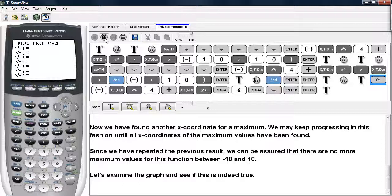Now let's take a look at the graph to see if this is true. So we hit y equals, and we type in our function, negative x to the fourth plus x squared.